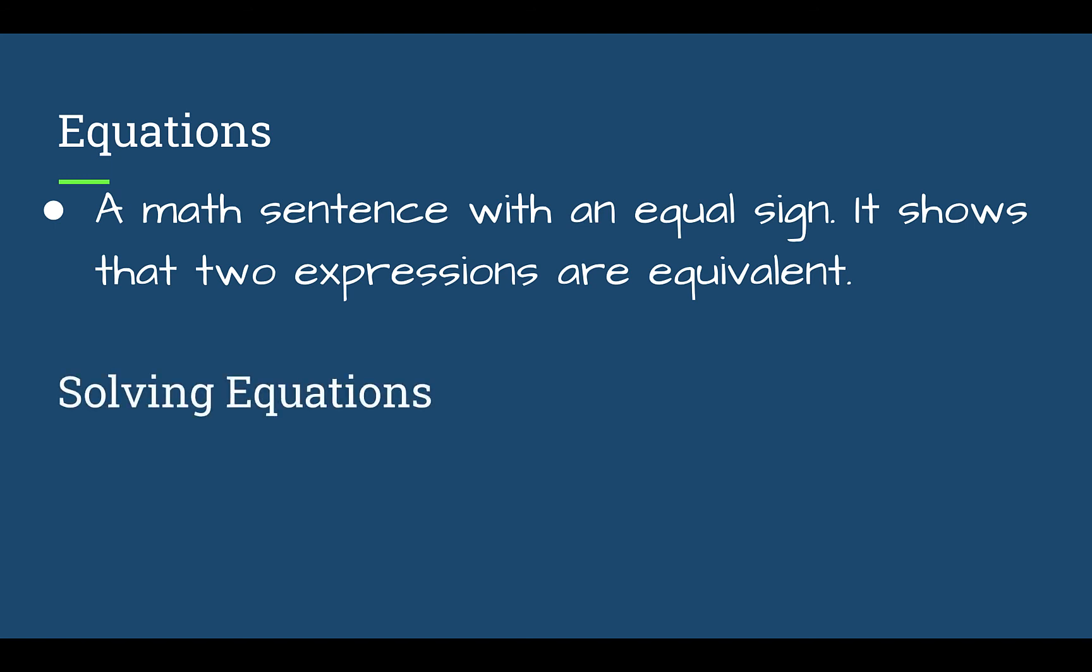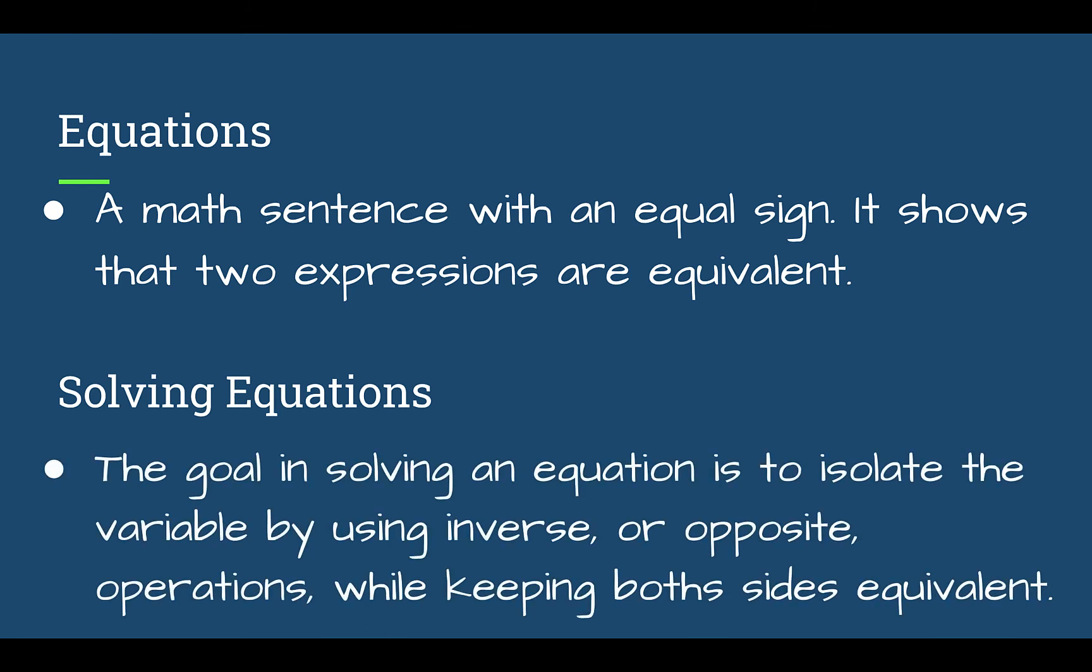So when we're solving our equations, your goal is going to be to isolate the variable. And we need to do this by using inverse or opposite operations all while keeping both sides equivalent. Okay. So they're equal to begin with. And as we move through it, they still have to be equal the entire time.